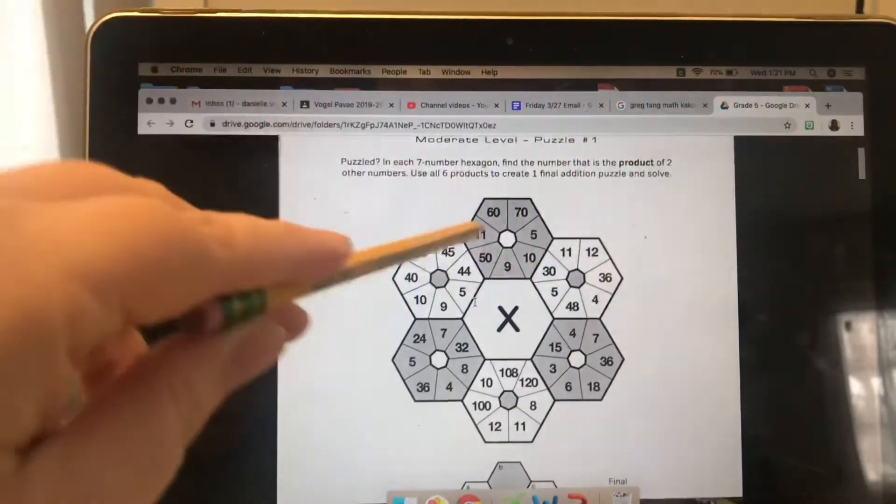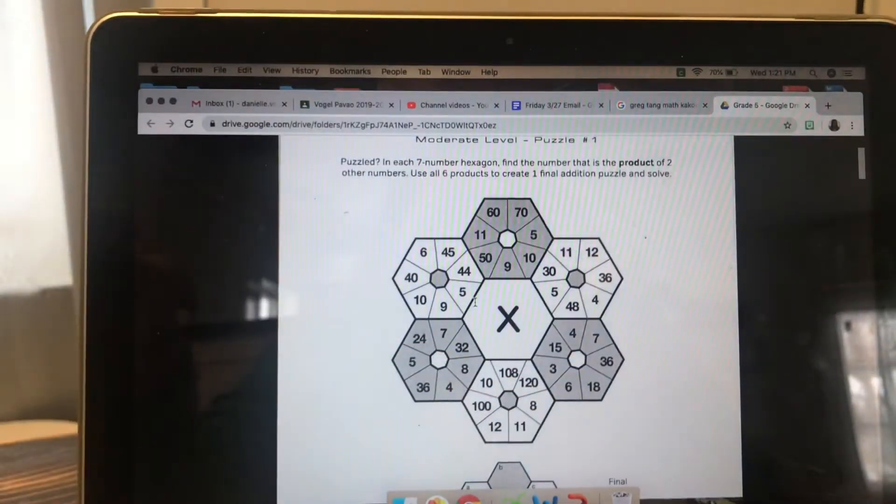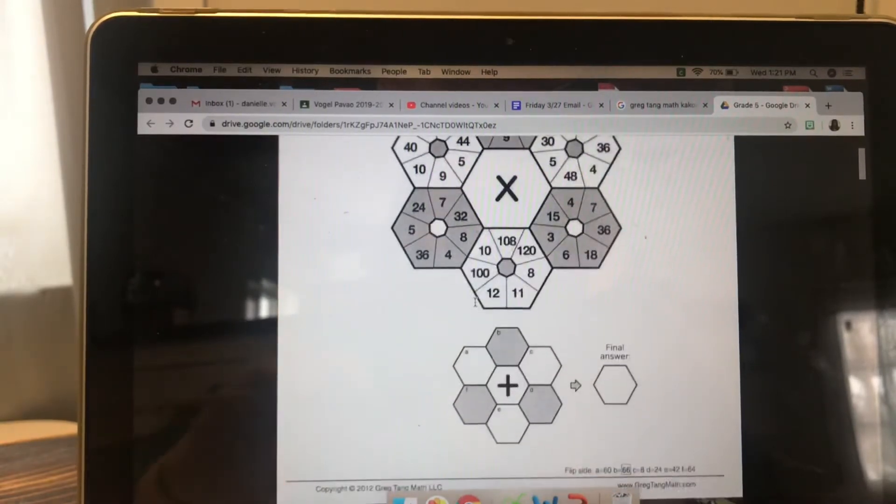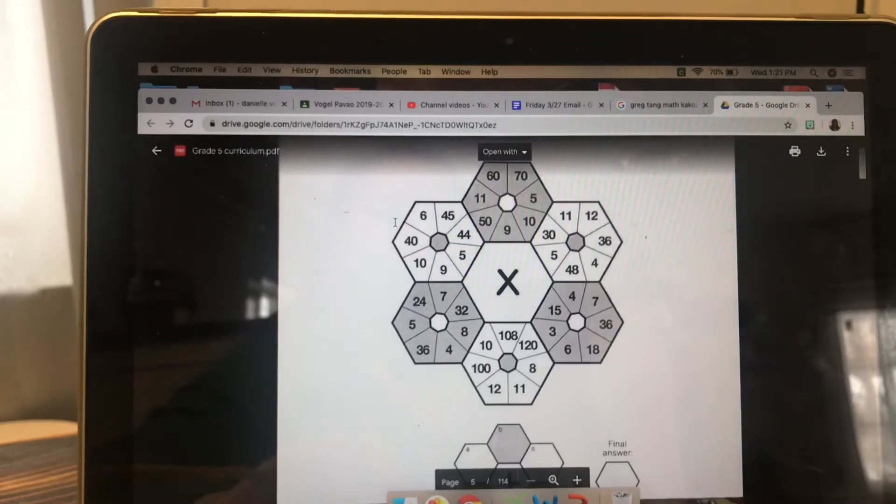So it says use all six products to create one final addition puzzle and solve. So the addition puzzle would go down here. Alright, so I'm back at the top.